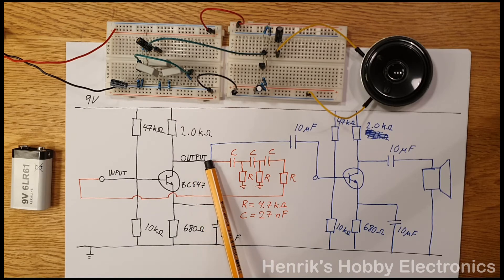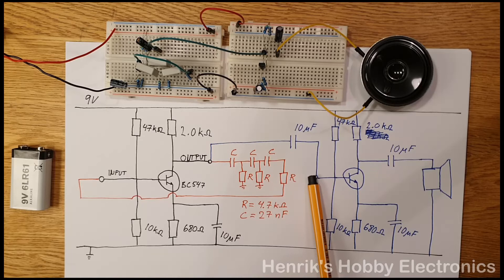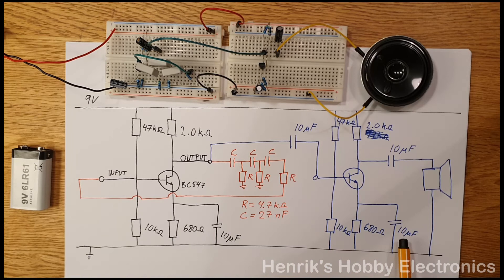And now from the output we have this DC blocking capacitor and then we pass this into the input of another identical common emitter amplifier which is in blue. From the output of this one we have the loudspeaker. We have all the component values here on this paper.